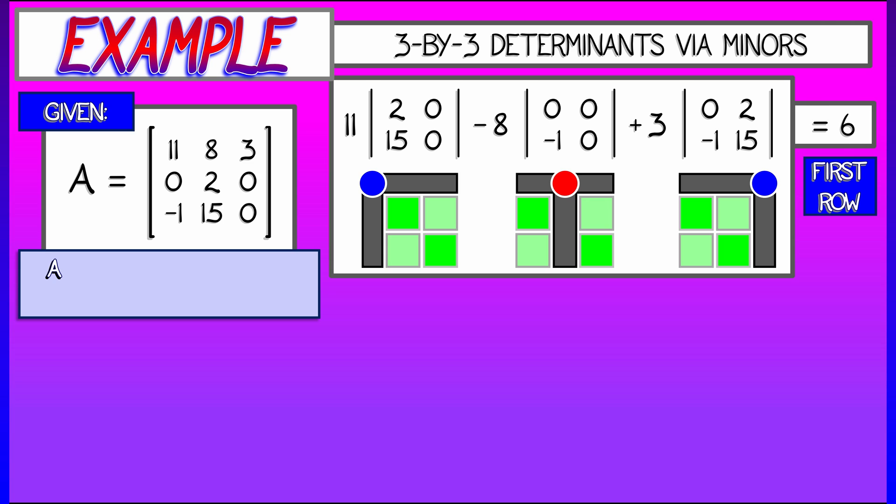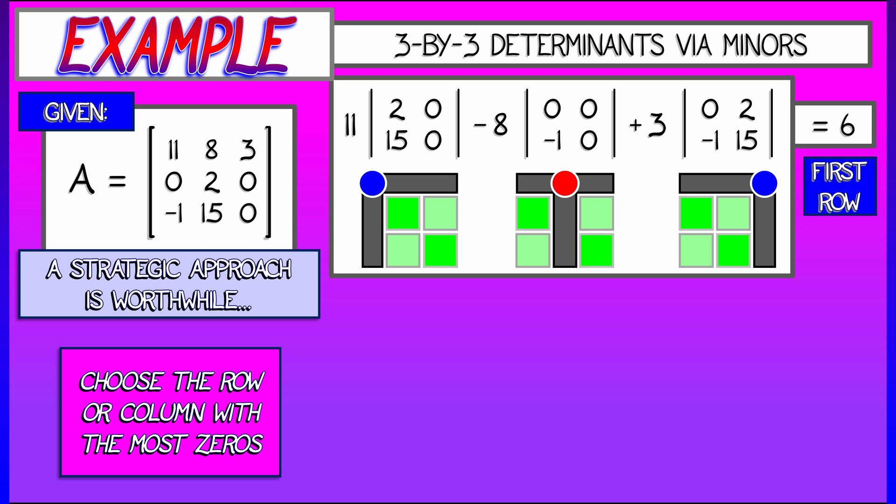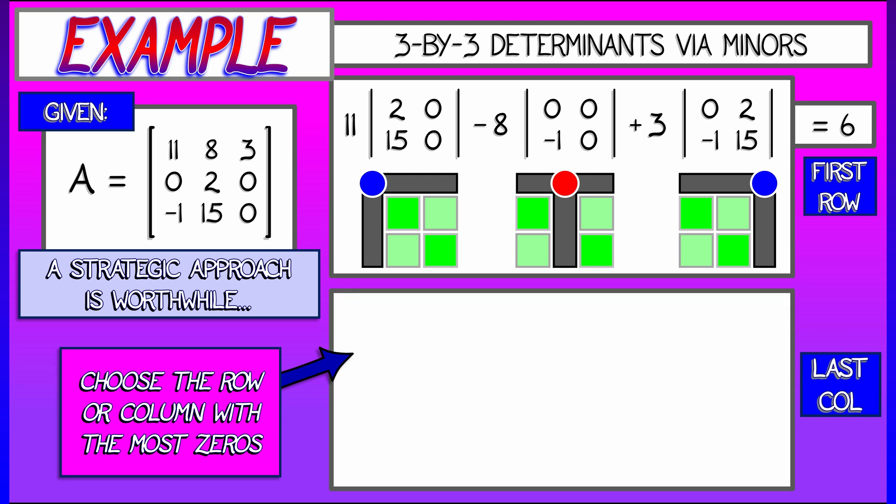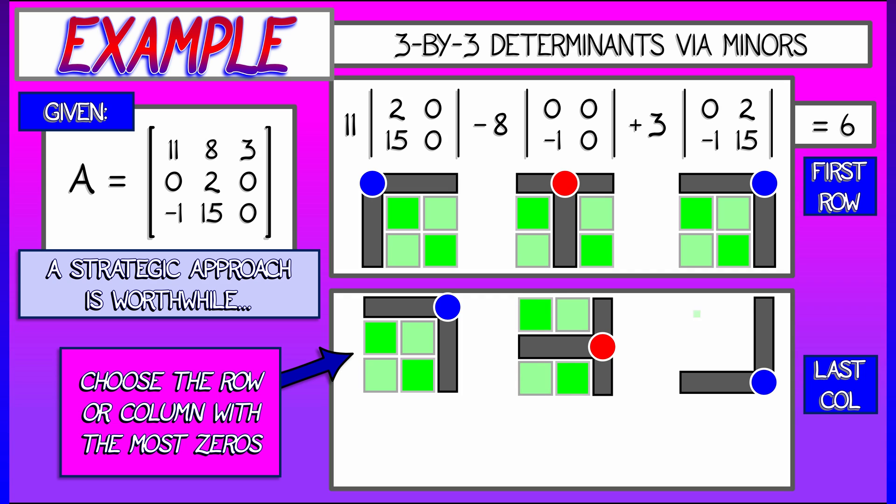However, let's be strategic about which row or column about which we expand. If we choose, in this case, the last column, that has a lot of zeros in it. Then we can do a minor expansion where most of the terms just automatically vanish.